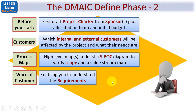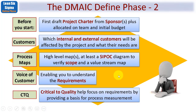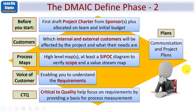We need to generate the Voice of the Customer, or VOC, which enables you to understand exactly what the customer's requirements are. From that we lead on to critical to quality requirements, which help focus on those requirements by providing a basis for process measurement. Remember the M in DMAIC stands for Measure, so we'll be using our CTQ requirements in the measurement phase as well. We also need communication plans and project plans.